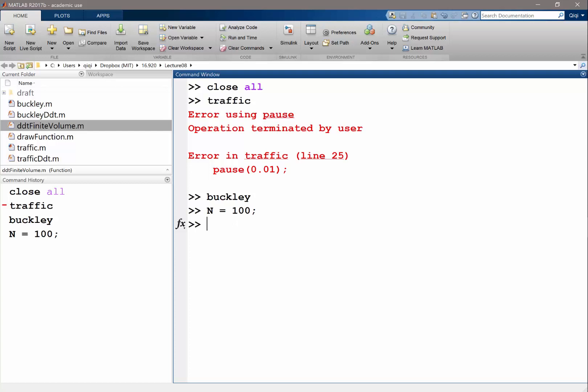So x is linspace 0, 1, n plus 1. dx is x 2 to n minus x 1 to n minus 1. So that's my volume size.